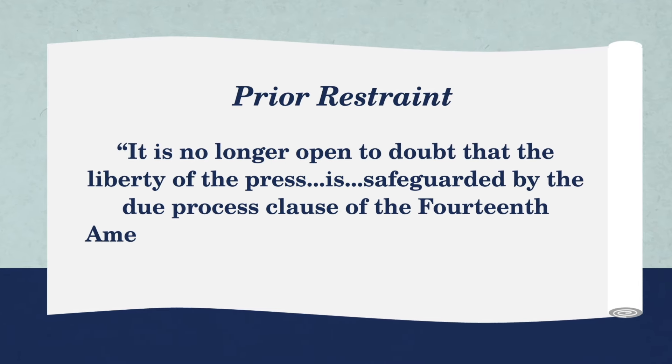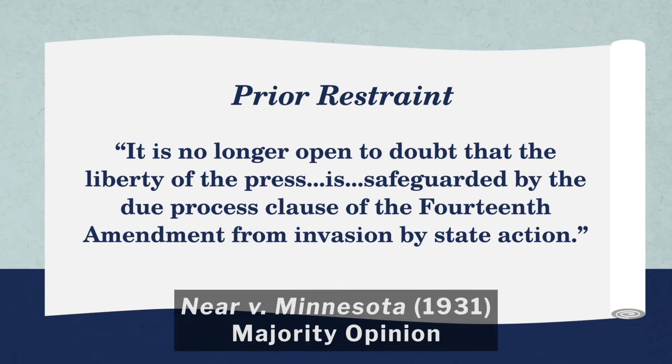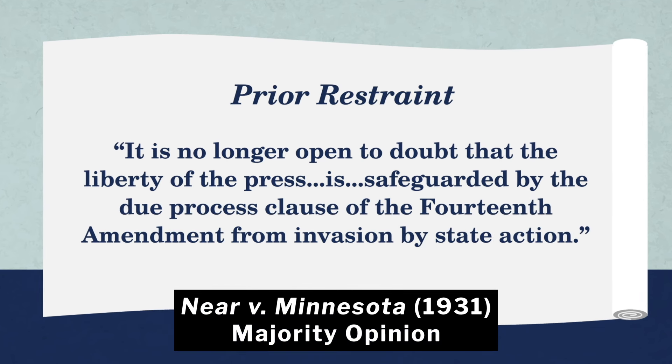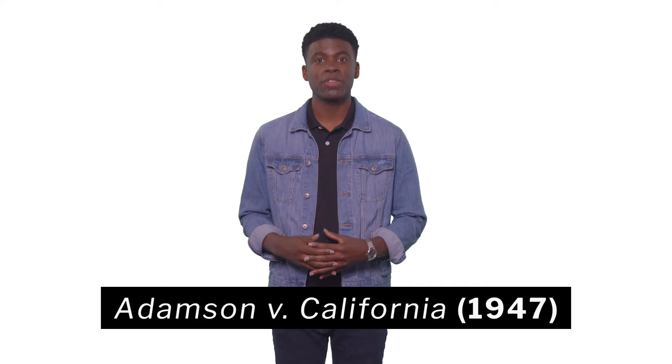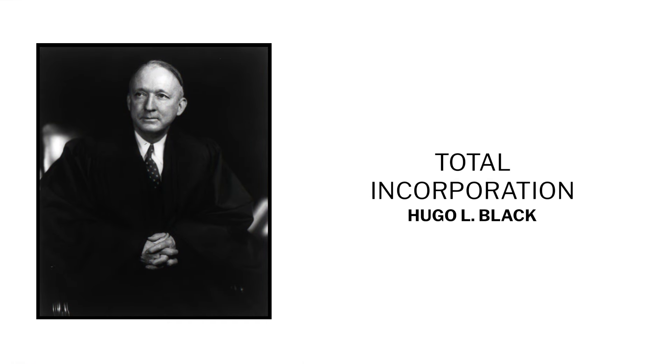In 1868, the 14th Amendment was ratified and aimed to protect the rights of African Americans who were forever freed by the 13th Amendment. The 14th Amendment was primarily aimed at the states because during Reconstruction, the radical Republicans in Congress were particularly interested in protecting freed people from having states violate their rights. These included black citizenship, guaranteed privileges and immunities, equal protection of the law, and due process of the law.